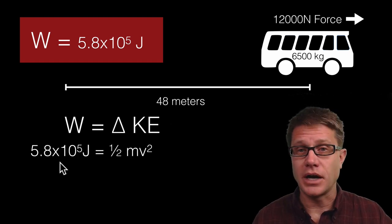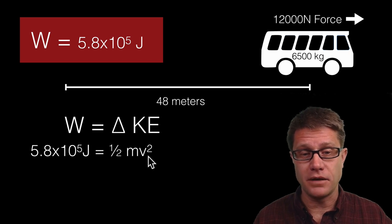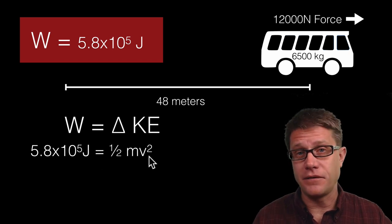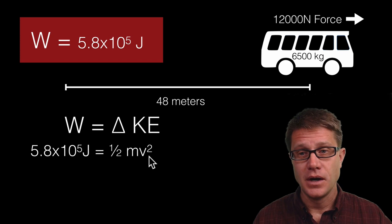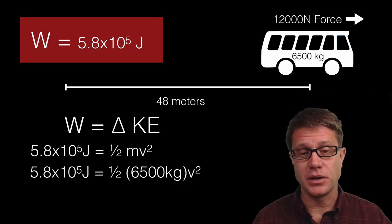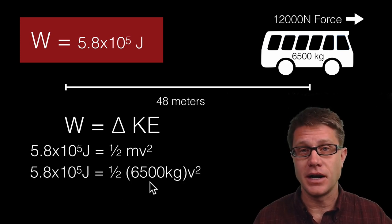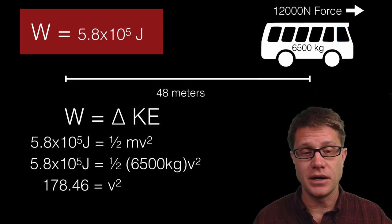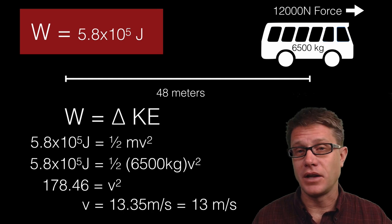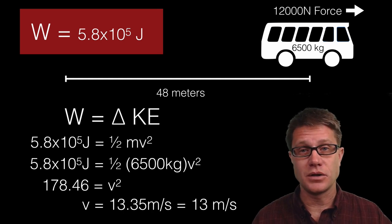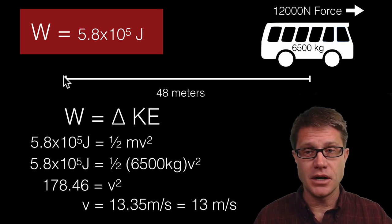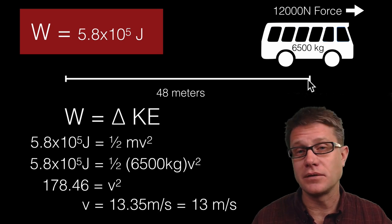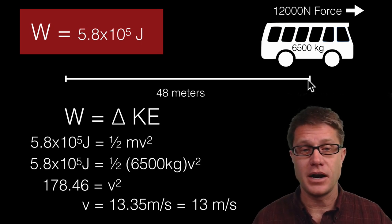The amount of work, which we calculated before, is equal to one half mv squared. That's the final kinetic energy. We know the mass of the bus, so we can just plug that in. It's 6500 kilograms. Then we can simply solve for v, the final velocity of the bus. If I do that, I get a velocity of around 13 meters per second. So it started at zero, ends up at 13 meters per second, so it's got around 30 miles an hour at the end.